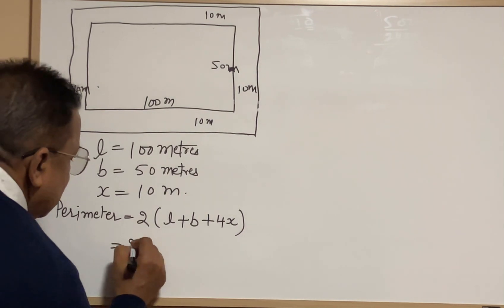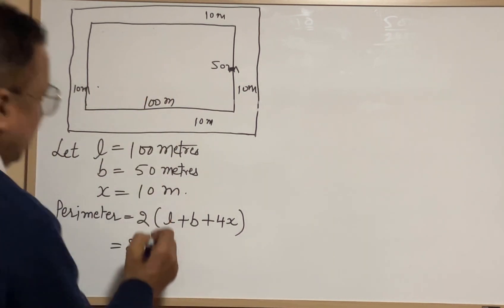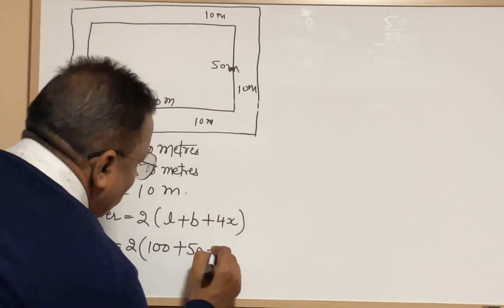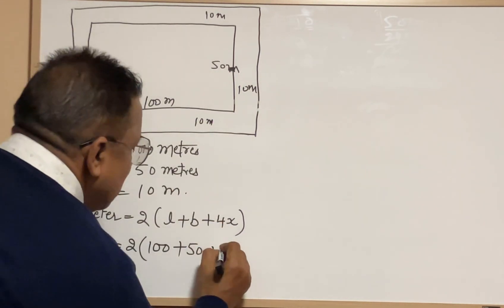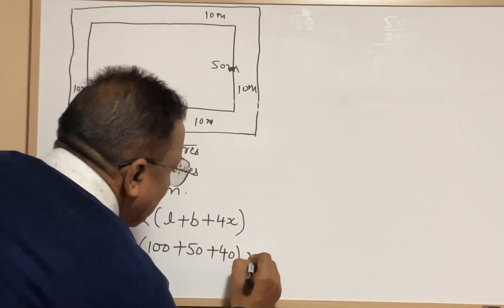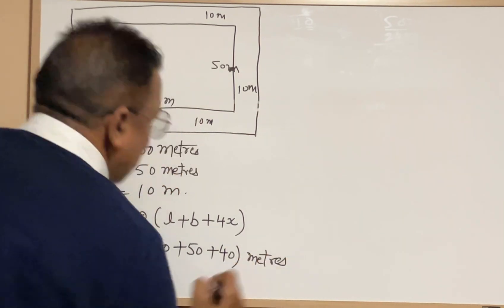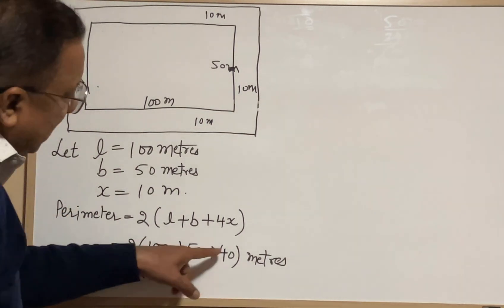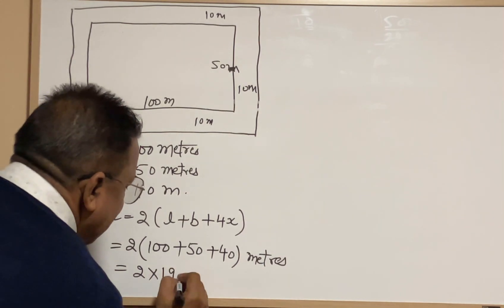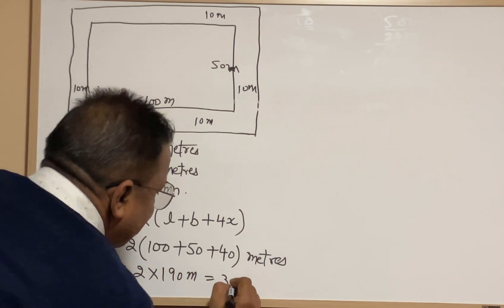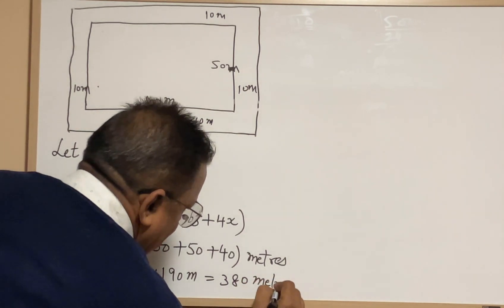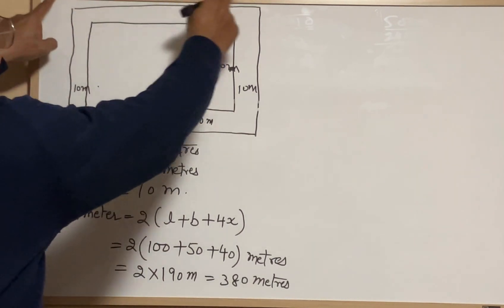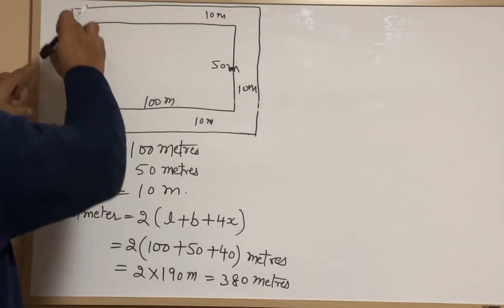We take two times: length is 100, breadth is 50, and four times the width is 4 times 10, which equals 40. The sum is 100 plus 50 plus 40, that is 190. Two times 190 becomes 380 meters.